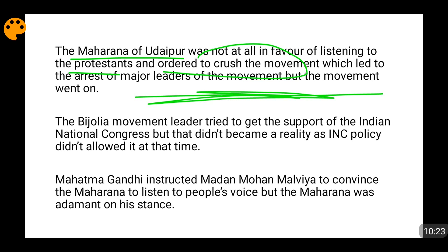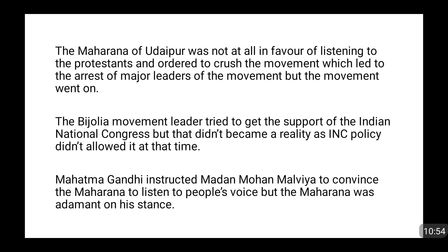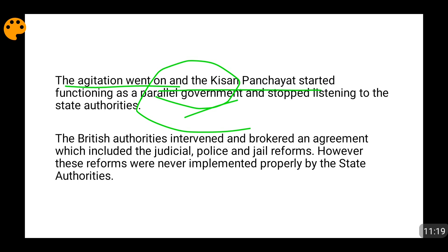The Bijouliya movement leaders also tried to get support from the Indian National Congress, but could not, because the official policy of the INC did not allow intervention in the princely states. However, Mahatma Gandhi was aware of the problem and instructed Madhan Mohal Malviya to talk to the Maharana of Udaipur and convince him to listen to the people of Bijouliya Jagir. But the Maharana was very adamant — full of ego — and refused to yield to the demands of his own people. The Kisan Panchayat then established a parallel government and stopped obeying state authorities.